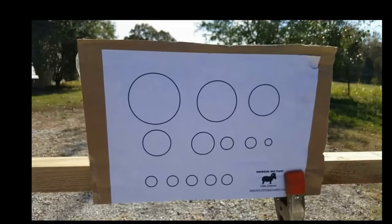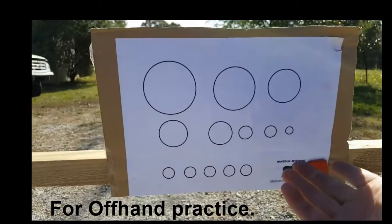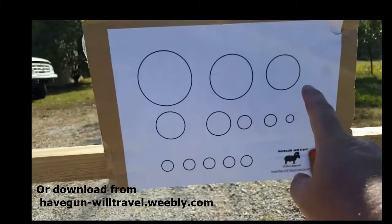This here is my favorite offhand practice target. It's nothing more than a bunch of circles. You could make them just with a compass, a couple of paint cans, whatever you want. It's graduated from largest to smallest.